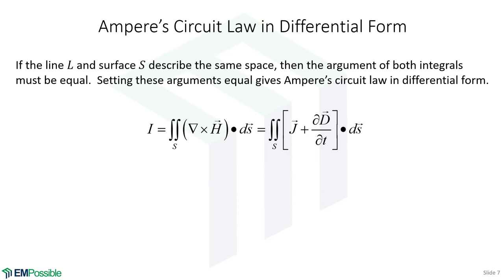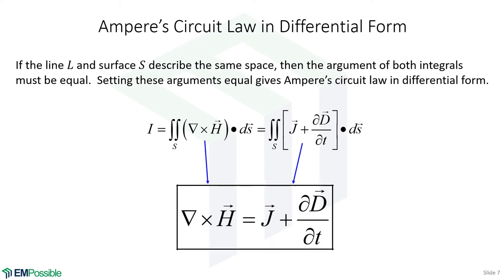So this is where we were from the previous slide. And what we see is that we have two surface integrals. We have the same dot dS in both of these equations, and they're giving us the same answer. That has to mean that these two terms that we're integrating are equal. And so when we set those equal, we arrive at Ampere circuit law in differential form.